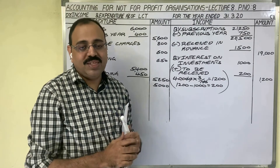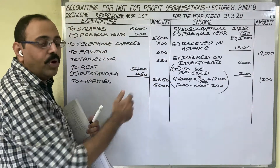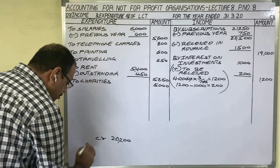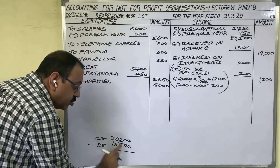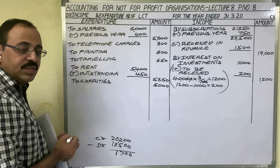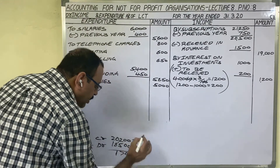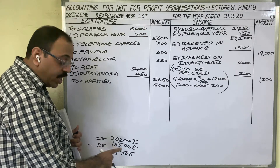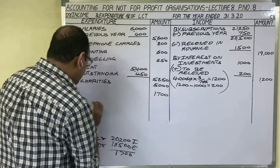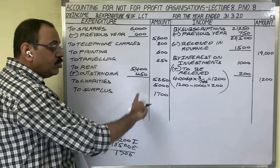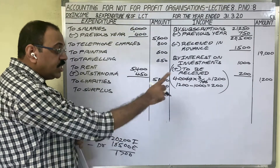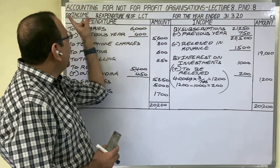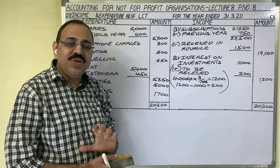Finally, we find the surplus or deficit. In rough notes: credit total is 20,200 rupees minus debit total 18,500 rupees = difference of 1,700 rupees. Income is more than expenditure, so the answer is surplus of 1,700 rupees. Since the debit side total is less, we write surplus 1,700 on the debit side. Both sides total 20,200 rupees. This completes the eighth problem from accounting for not-for-profit organizations. Hope this video is helpful to you. Thank you.